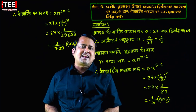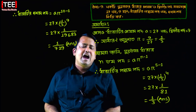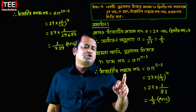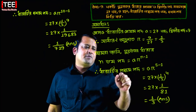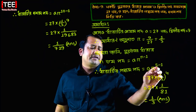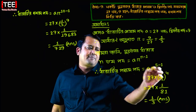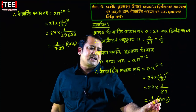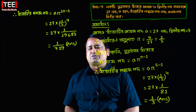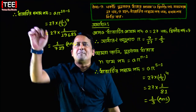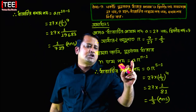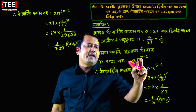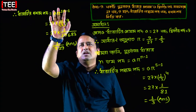We know that the general term of a geometric series formula is: a times r to the power (n minus 1). For the nth term, substituting n, we write 10 in place of n and calculate accordingly.